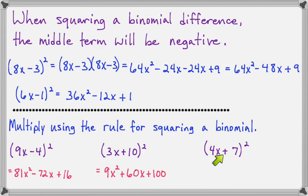For 4x plus 7 squared, 4x times 4x will give us 16x squared. The middle term, 4x times 7 will give us 28x times 2, makes 56x. And last times last makes plus 49.